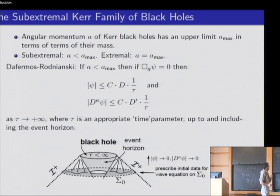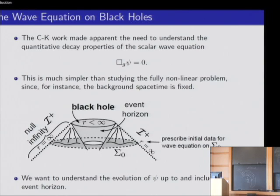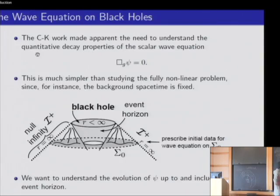We're trying to understand the wave equation on Kerr black holes. For a Kerr black hole, we have angular momentum which has an upper bound in terms of the mass. The sub-extremal Kerr family consists of those black holes for which the angular momentum is not at its maximum. Psi here is just a scalar — this is a scalar linear homogeneous wave equation, the simplest possible setup. The Einstein equations involve a quasi-linear equation since the metric depends on itself, but this is the simplest possible problem: a scalar linear wave equation on this geometry.